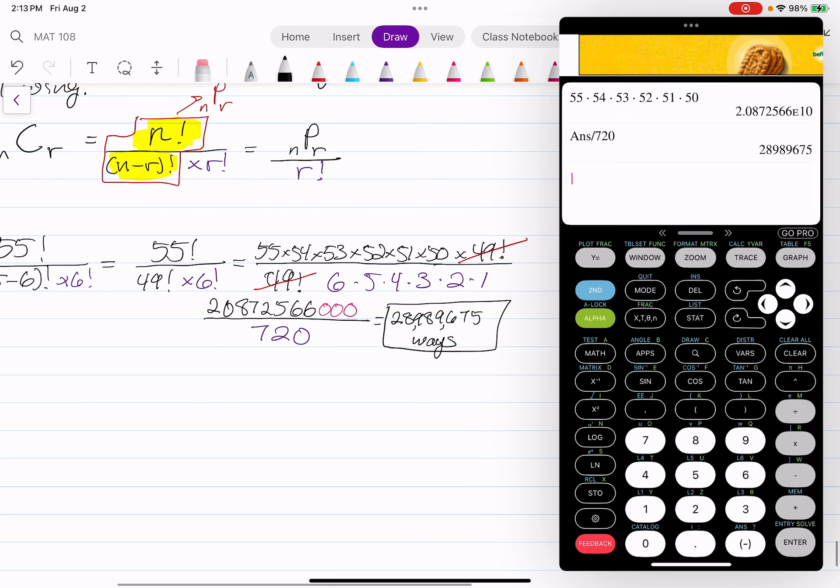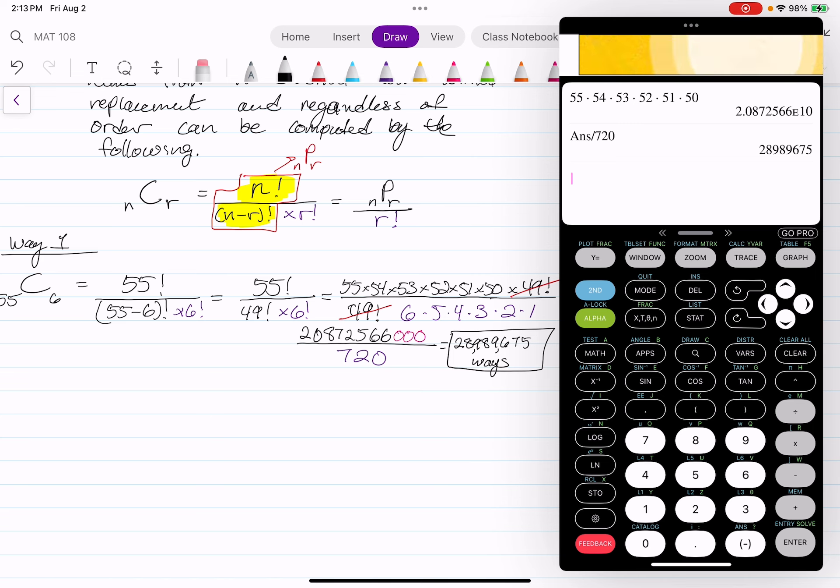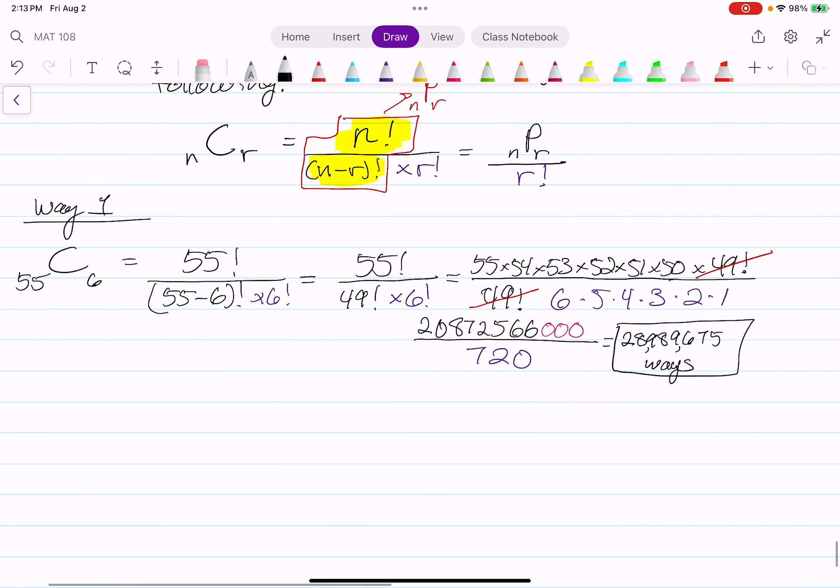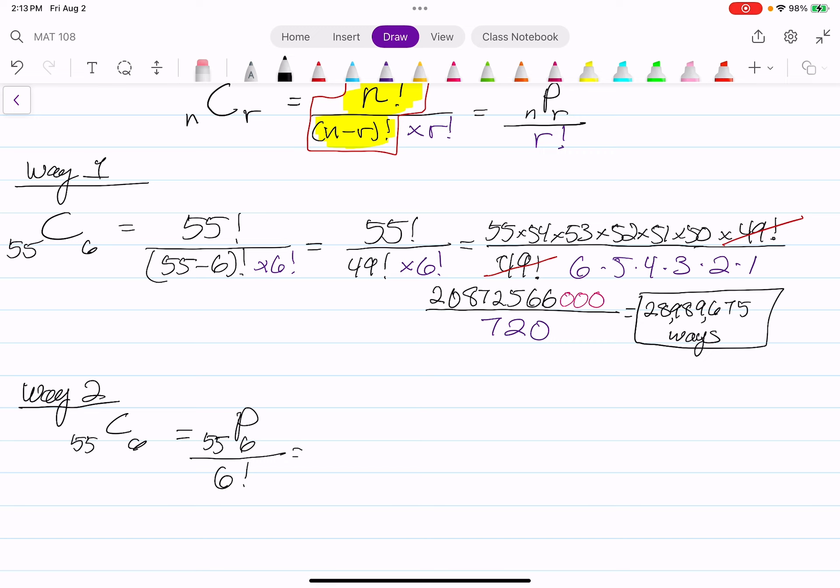So that is how you compute the combination of 55 and 6. So way number 2, compute in the combination of 55 to 6. This equals to the permutation of 55 and 6 divided by 6 factorial. We know already 6 factorial is 720.